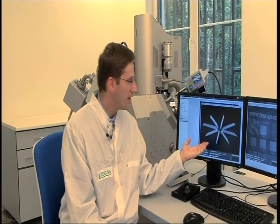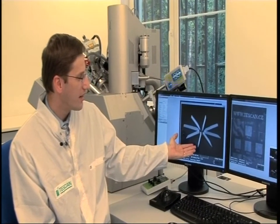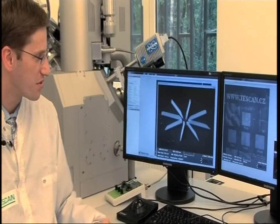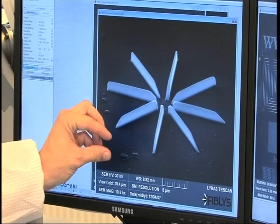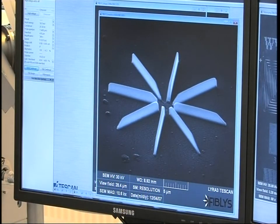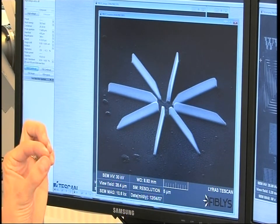In the third example, we can see a structure which has grown on a substrate. Here is what it is. We release gas into the environment of the sample. In this case, a compound containing platinum. And using the ion beam, we break this compound.